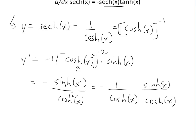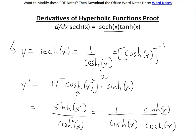negative, and by definition this is hyperbolic secant of x, and then multiply by this definition which is hyperbolic tangent of x. This is our answer, and this is the exact same thing as what we wanted to prove. This is the proof for this derivative.